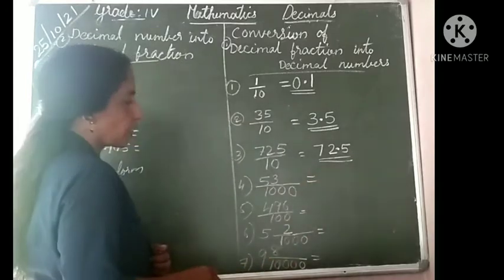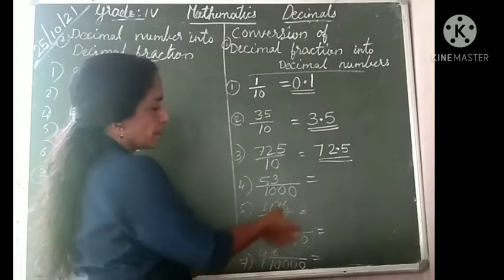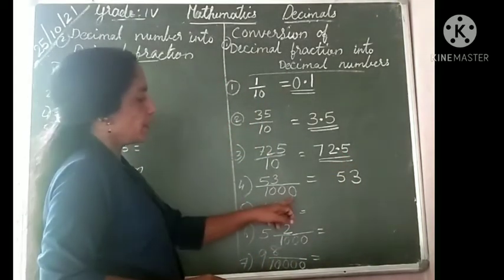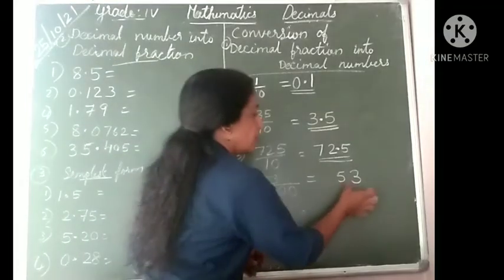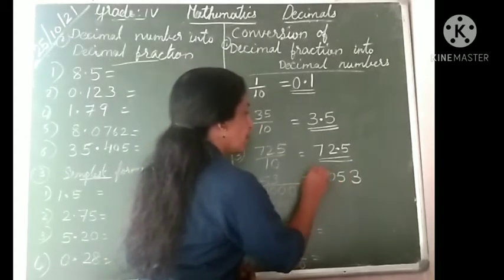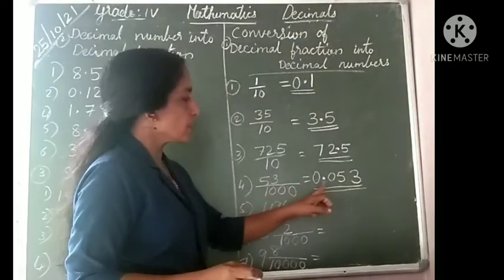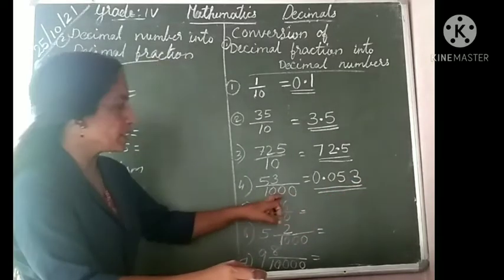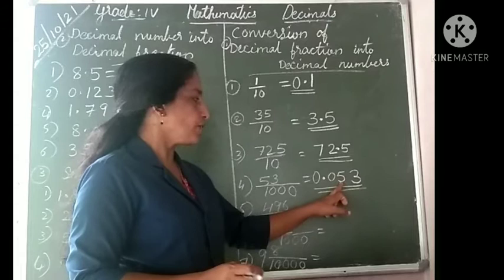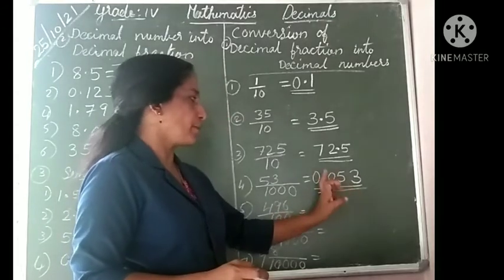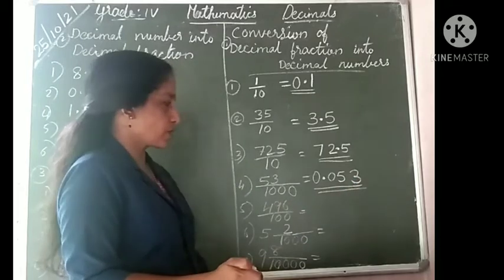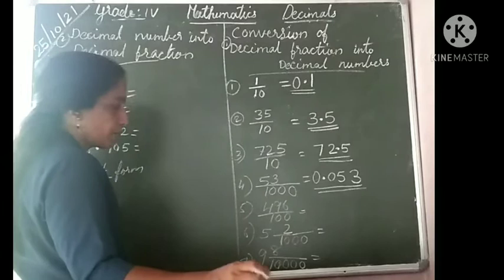Next: 53 divided by 1000. Here 1000 has three zeros. The numerator is 53, which has only 2 digits. We need 3 digits after the decimal, so add one zero before 53, giving 053. There is no whole part, so put 0. The answer is 0.053. Here, 0 is in the tenth place, 5 in the hundredth place, and 3 in the thousandth place.